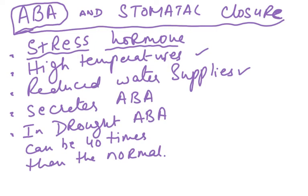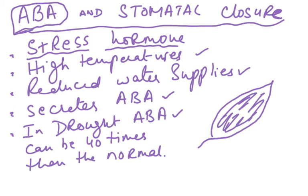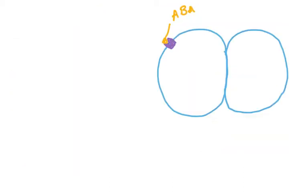ABA can be found in every part of the plant and is synthesized in almost all cells that possess chloroplasts. During drought, ABA levels can be 40 times higher than normal. When ABA is applied synthetically to the surface of leaves, stomata close within just a few minutes, confirming that ABA triggers some mechanism causing the plant to sense it and close the stomata.